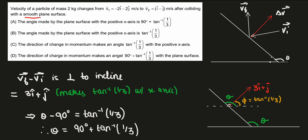For a smooth plane surface, there is no change in momentum along the plane or along the incline surface, as there is no friction. So there is no change in momentum along the incline. The only change in momentum occurs in the direction perpendicular to the incline. Therefore, if I find the change in momentum, it would only be in the direction perpendicular to the incline.